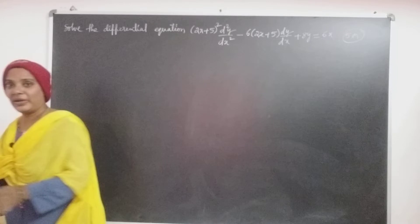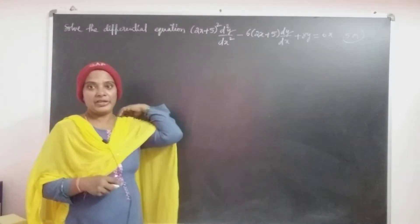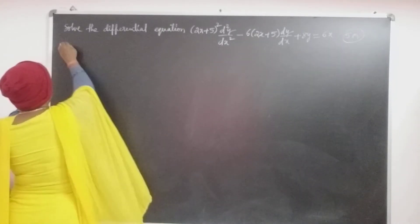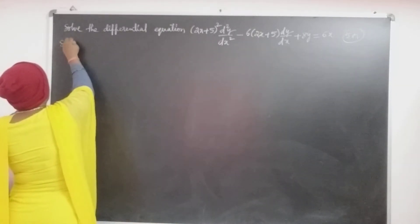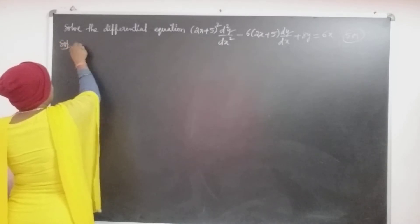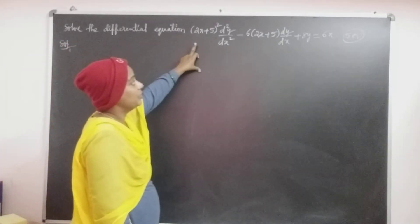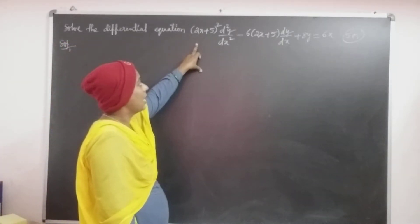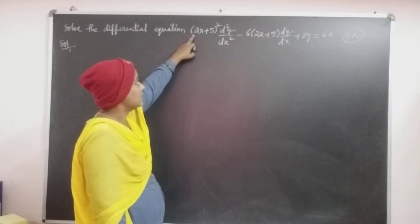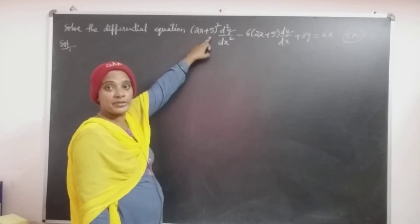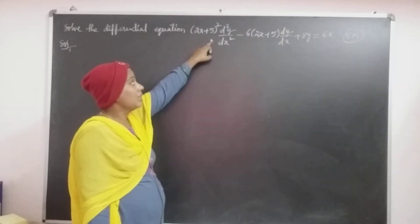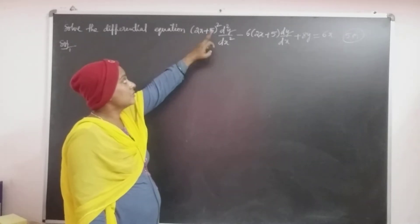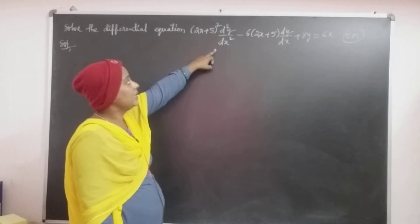By observing the given equation, it is clearly Legendre's form. First, the Legendre's equation can be written in the operator form, which can be expressed as (ax + b)² d²y/dx².